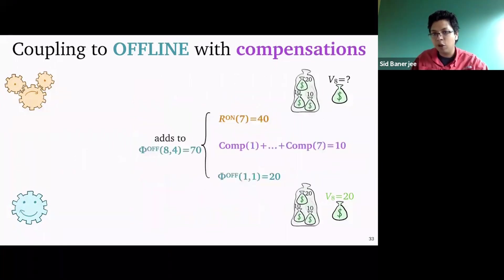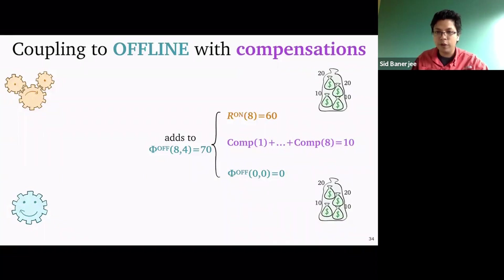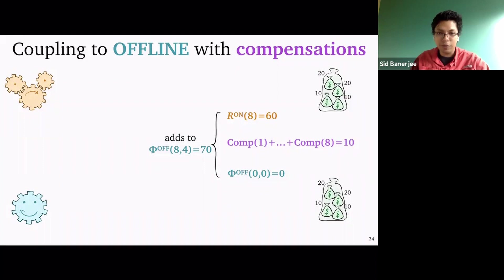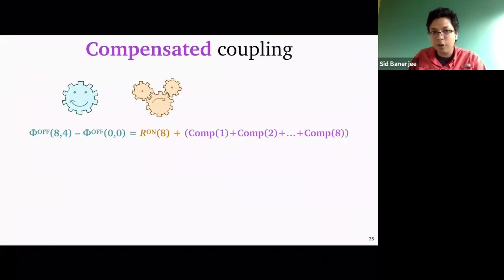This process keeps going: I keep taking more values and at each time may need to add more compensation. Running the system to almost the last step, online has accepted total value 40, offline has accepted exactly the same set of things, the sum of all compensations is still 10, and the sum of all three quantities still adds up to 70. Finally they both fill up their knapsacks, total online value is 60, offline has no more future value, the total compensation sum is 10, and this adds up to 70. What I've shown is that the difference between offline's future value at the beginning and end of this coupled process exactly equals the total value online got based on whatever decisions it took.